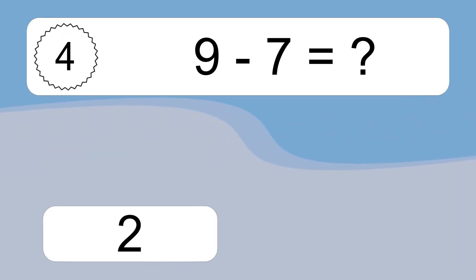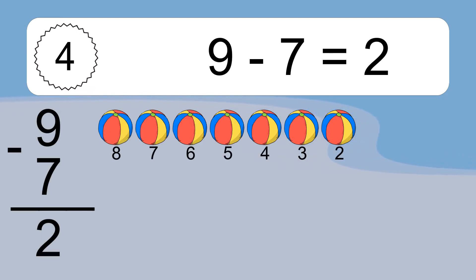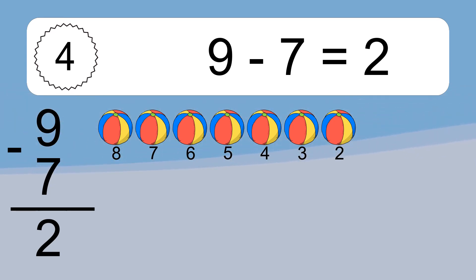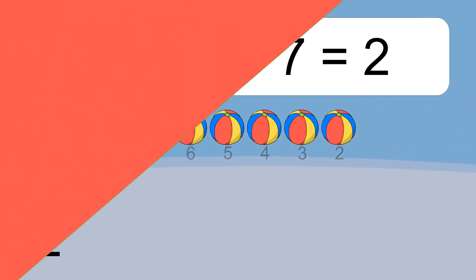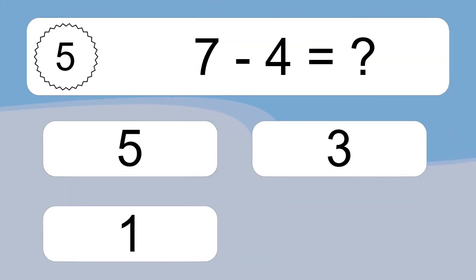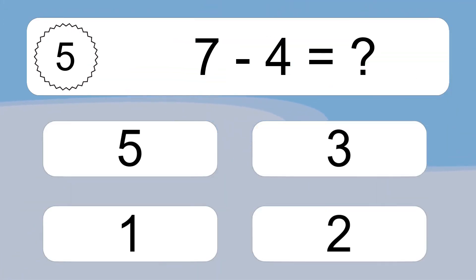9 minus 7 equals what? 9 minus 7 equals 2. Let's count it. 8, 7, 6, 5, 4, 3, 2.